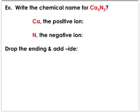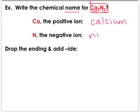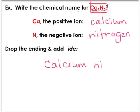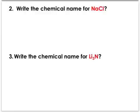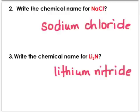Here's another example. When asked to name a compound, we first identify it as ionic: calcium is a metal and nitrogen is a non-metal. Ca is the positive ion — named calcium. N is the negative ion — named nitrogen, which changes to nitride. So this ionic compound becomes calcium nitride. We're not going to worry about the subscripts for now, as we'll come to that later. Try for yourself: NaCl and Li₃N. Hopefully you got sodium chloride and lithium nitride.